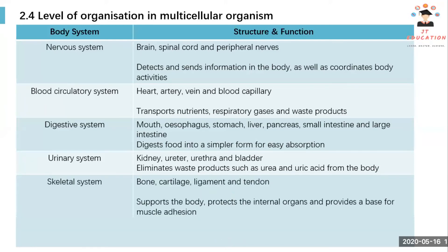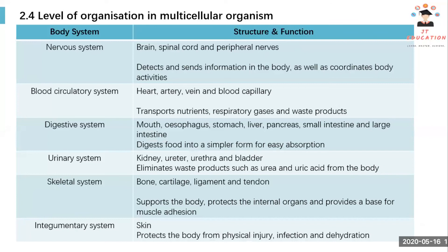The skeletal system contains bone, cartilage, ligament, and tendons, which support our body and protect the internal organs, and also provide the base for muscle adhesion. Finally, the integumentary system — which is the skin — protects the body from physical injuries, infection, and dehydration.